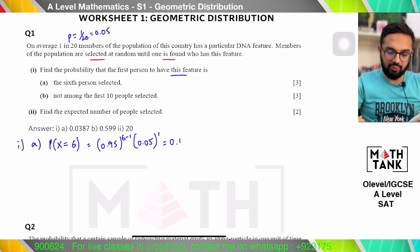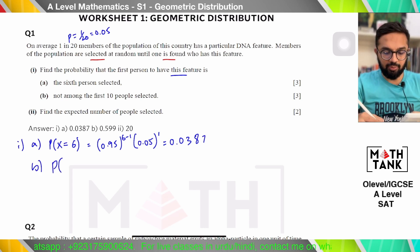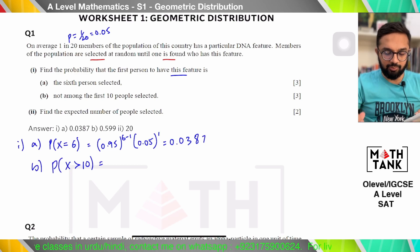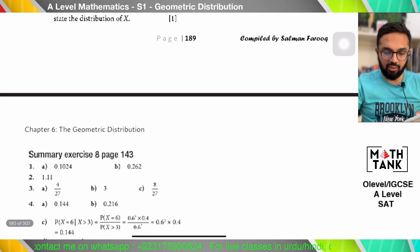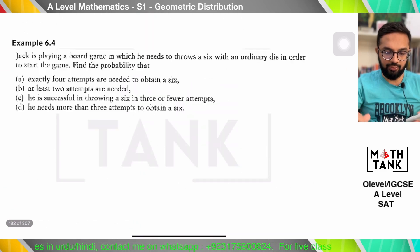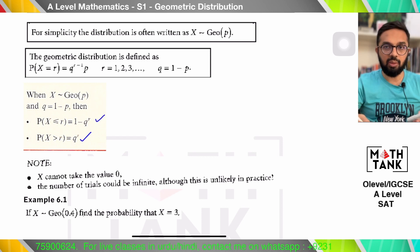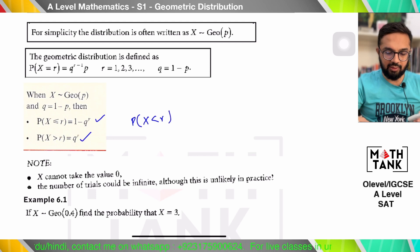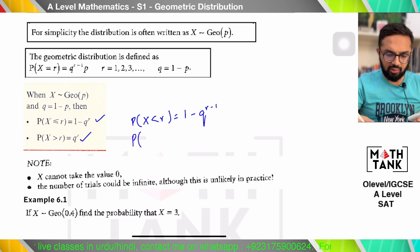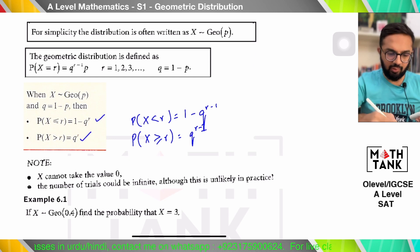I get 0.0387. Now, for the probability of not among the first 10 selected — that is P(X > 10). Let's go back and look at our formulas. We have formulas for greater than and less than. Greater than r is q^r, and less than or equal to r is 1 − q^r. You can also construct: P(X < r) = 1 − q^(r−1), and P(X ≥ r) = q^(r−1).